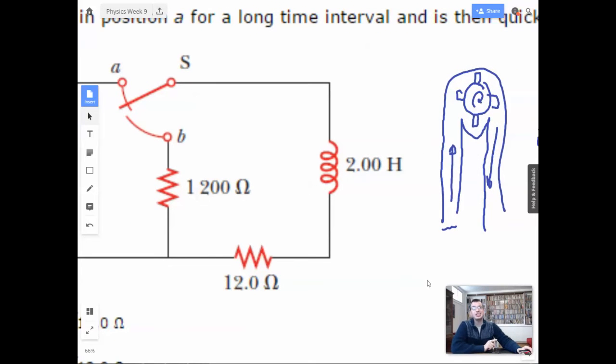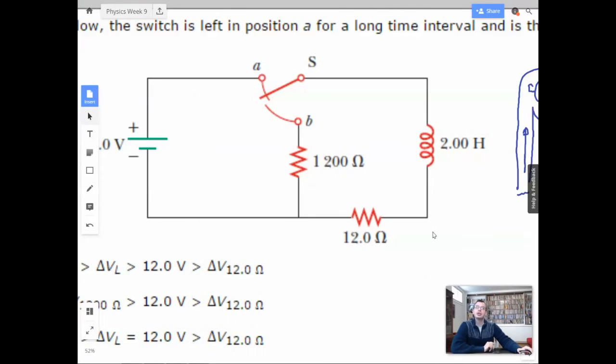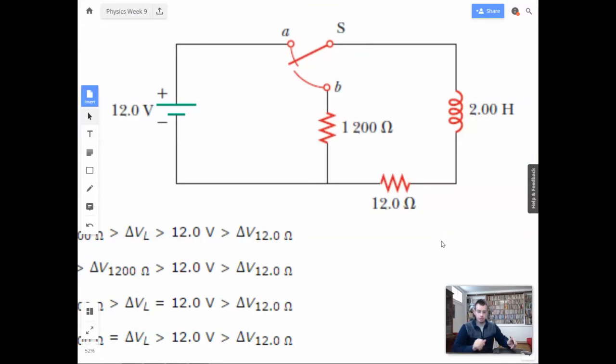So first thing we need to do is find out what the current is initially before we throw the switch. So before we throw the switch, the inductor is going to be spinning. And this is going to be offering no resistance to the flow of current initially, because it's already been flowing for a long time. It's already spun up. It's going.